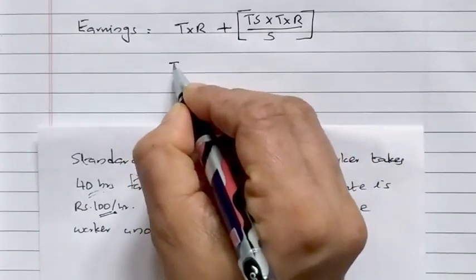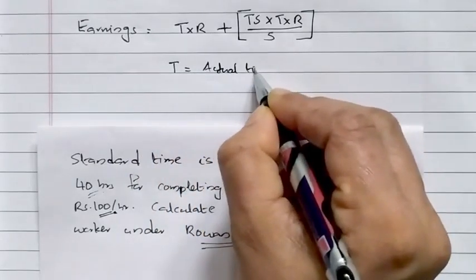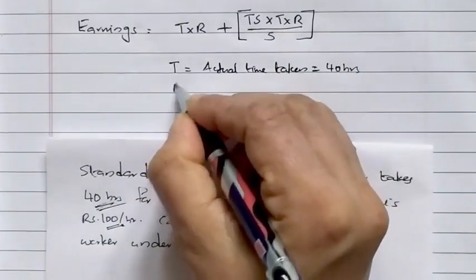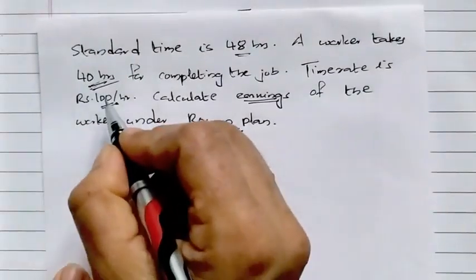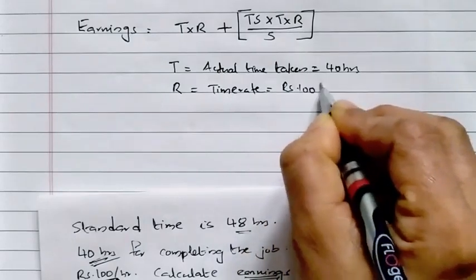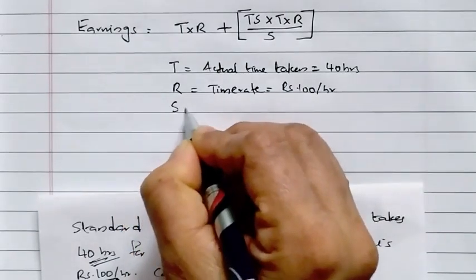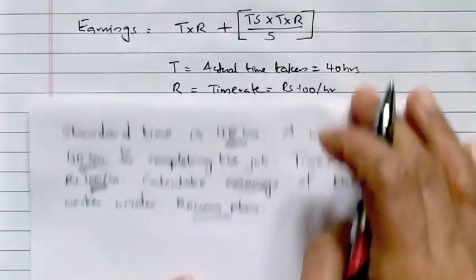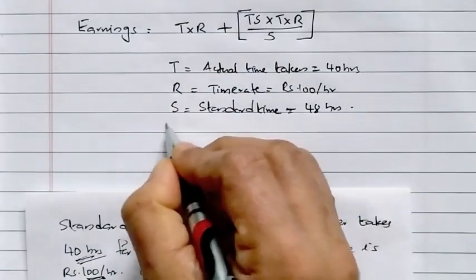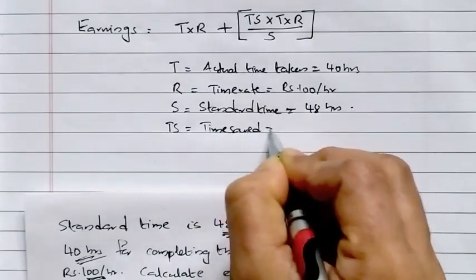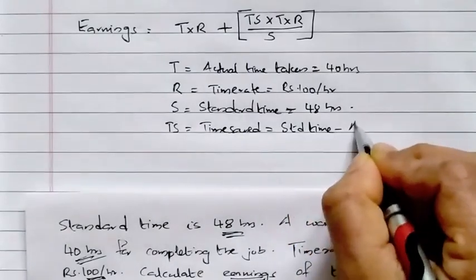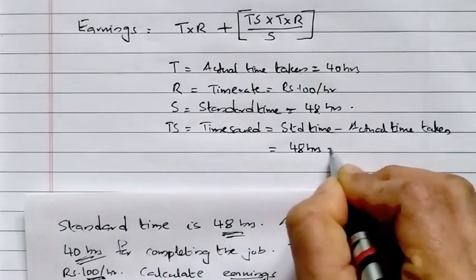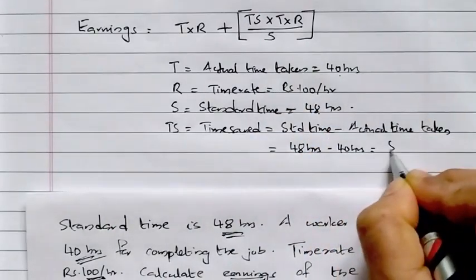Given: T = 40 hours (actual time taken), R = Rs. 100 per hour, S = 48 hours (standard time). Therefore, Time Saved, Ts = Standard Time − Actual Time Taken = 48 − 40 = 8 hours.